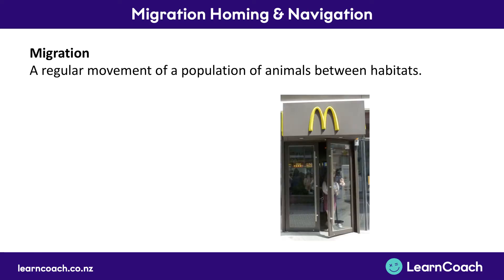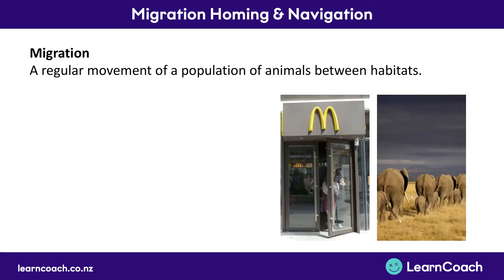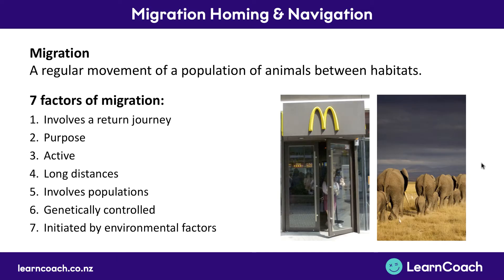This regular movement of a population of animals is different from, say, you going to McDonald's. We need seven different factors to articulate why us regularly moving to McDonald's is different from a whole lot of elephants trekking across Africa. So there are seven factors we need to know, and we're going to go through them one by one.